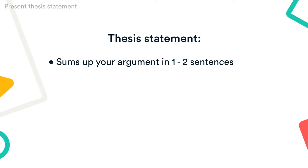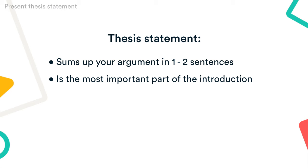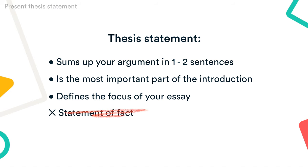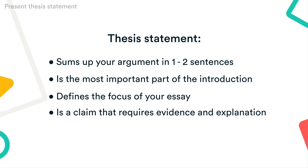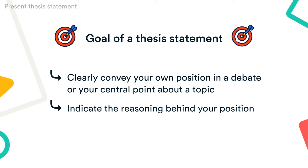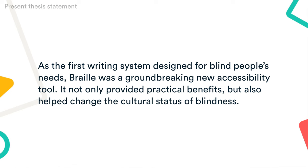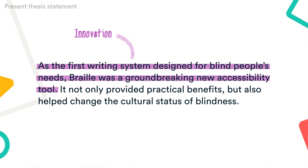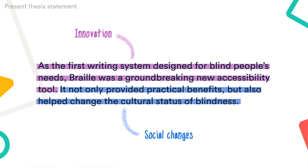Step 3: Present your thesis statement. Now it's time to narrow your focus and show exactly what you want to say about the topic. This is your thesis statement — a sentence or two that sums up your overall argument. It's the most important part of your introduction because it defines the focus of your whole essay. A thesis isn't just a statement of fact, but a claim that requires evidence and explanation. The goal is to clearly convey your own position and indicate the reasoning behind it. In our braille essay, the thesis sums up the two stages of our argument: the innovation of a writing system made for blind people, and the social changes it facilitated. More about thesis statements in our next video on this playlist.